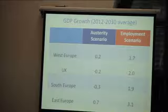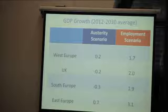What does it look like when you compare the two scenarios? First is GDP growth — this is an average of 2012 to 2030. The blue scenario is the austerity scenario. If we carry on as we are at the moment, you can see that the UK and Southern Europe over a 2012 to 2030 period are in recession. West and Southern Europe have very marginal GDP growth. The employment scenario is a much more positive outcome across the board with much more respectable figures — it's a pretty gradual trend over time.